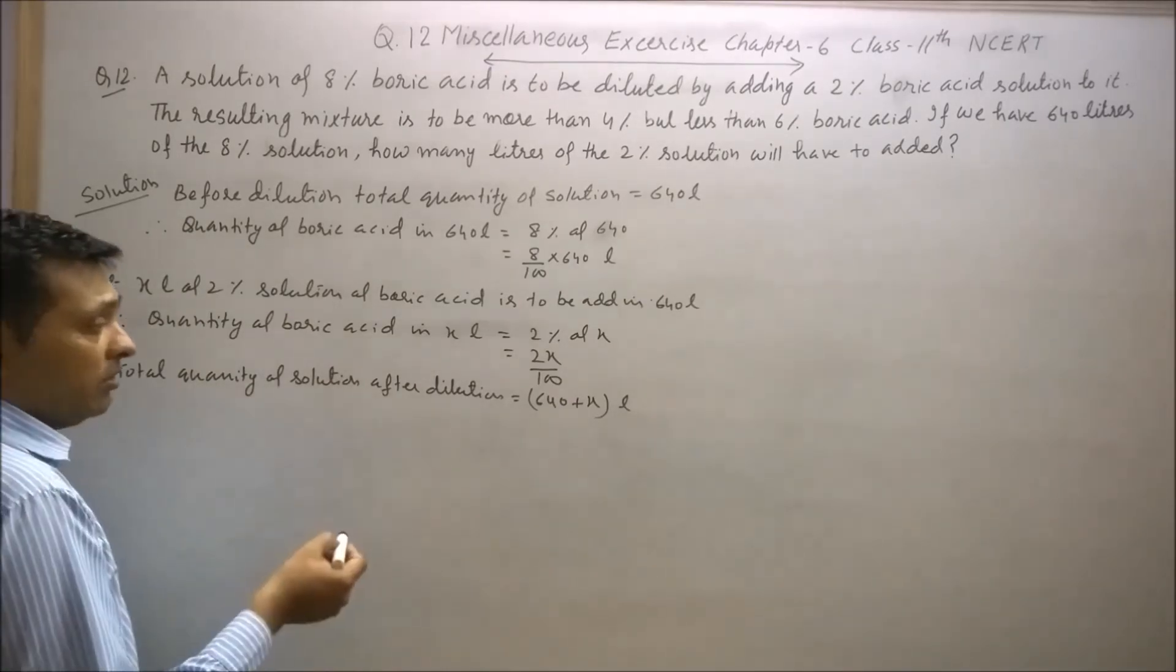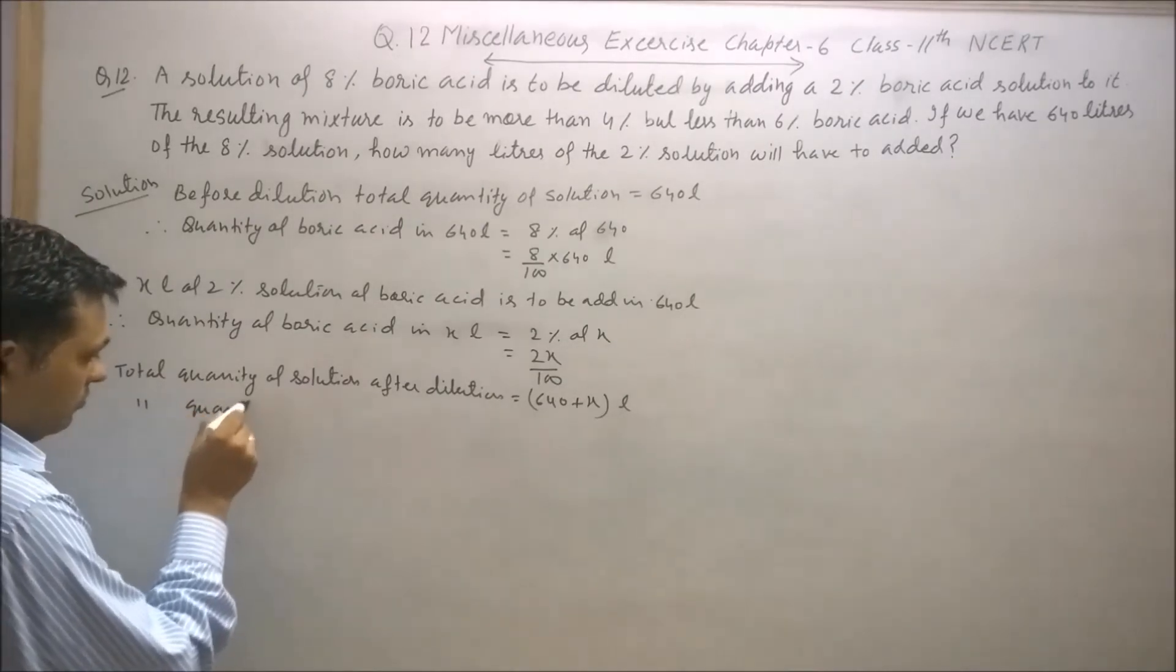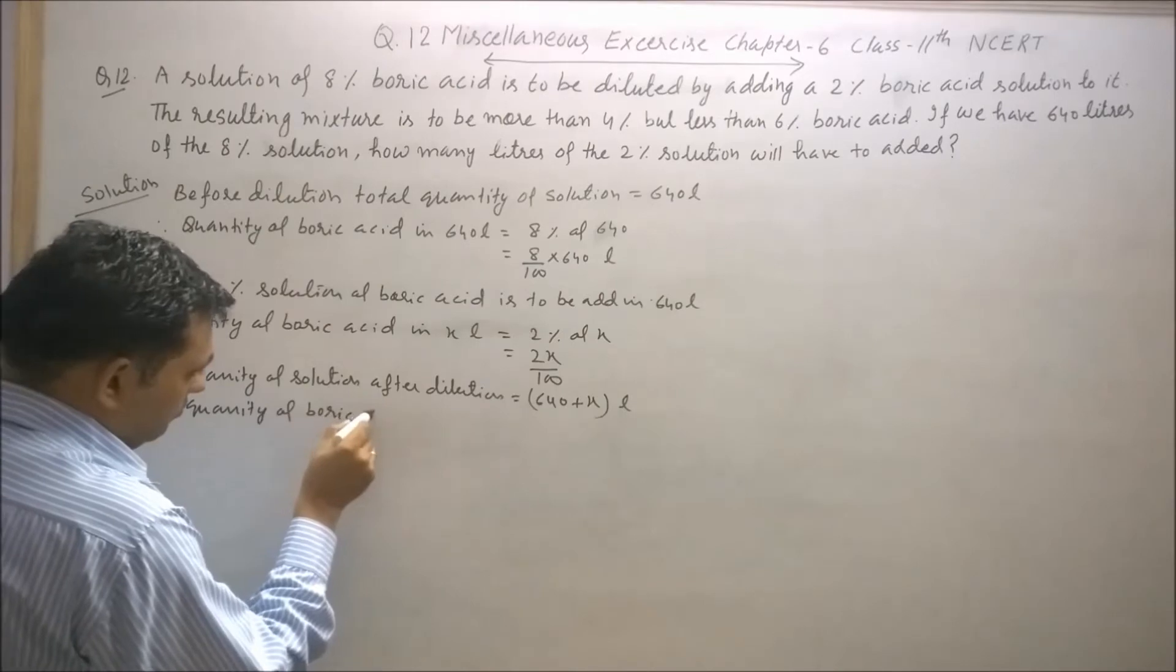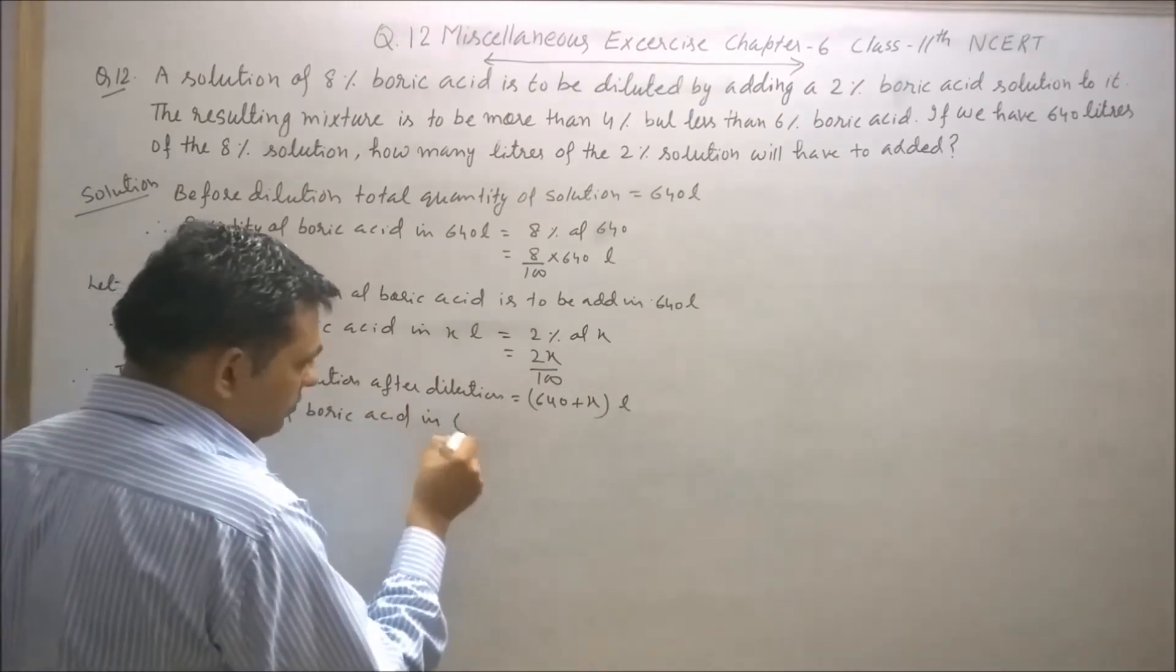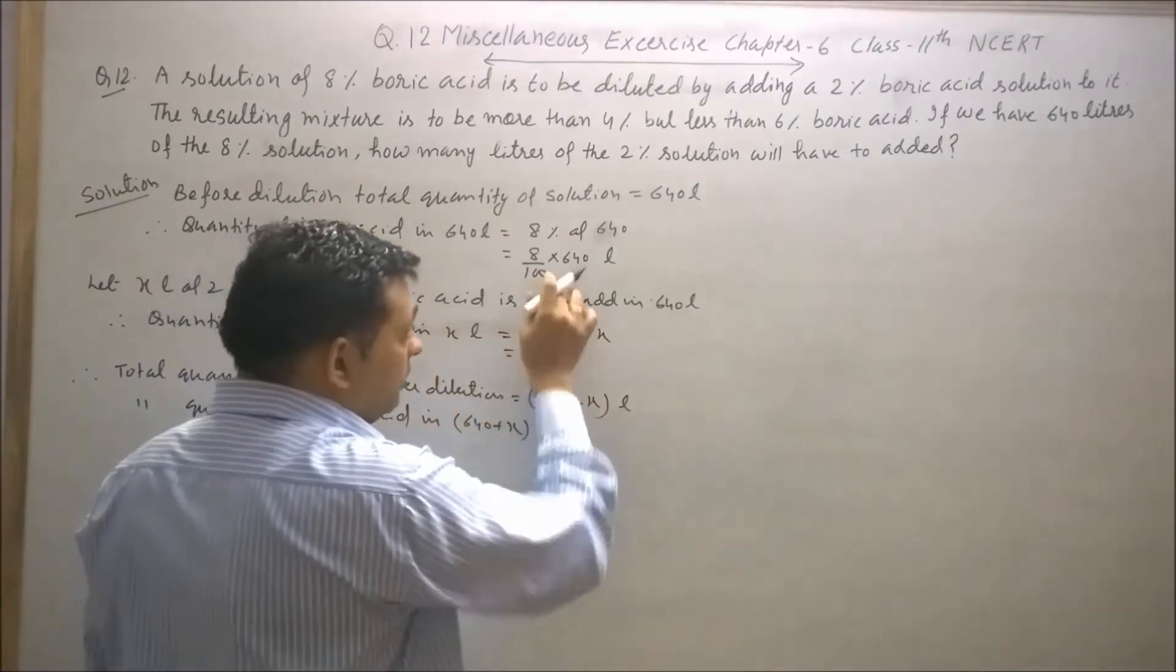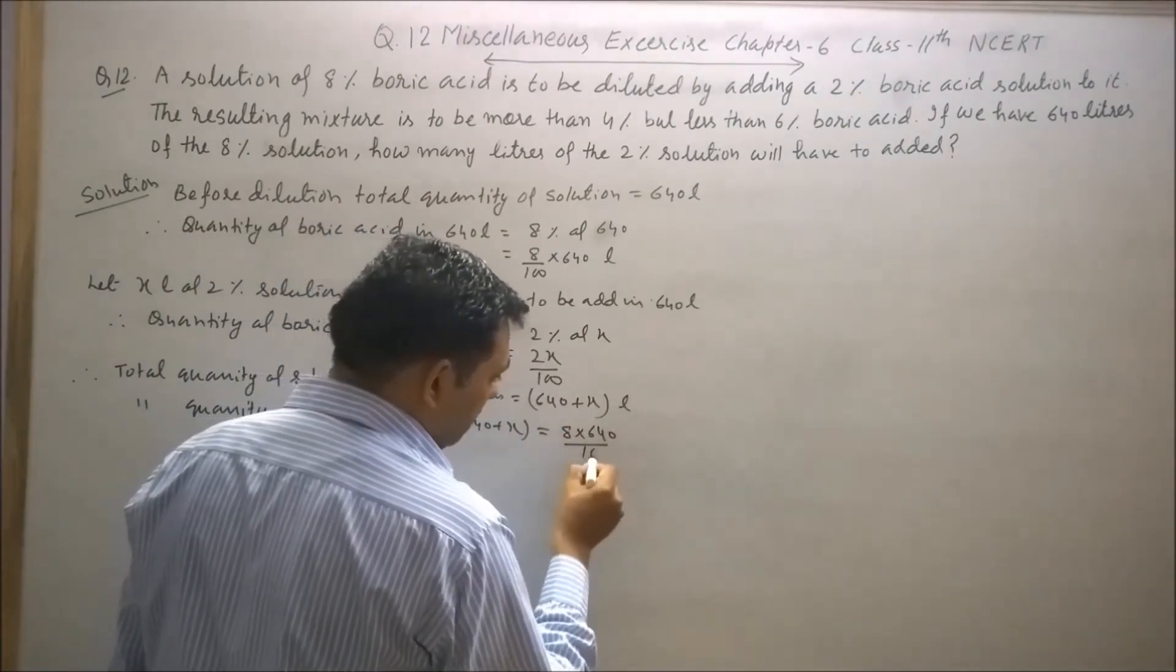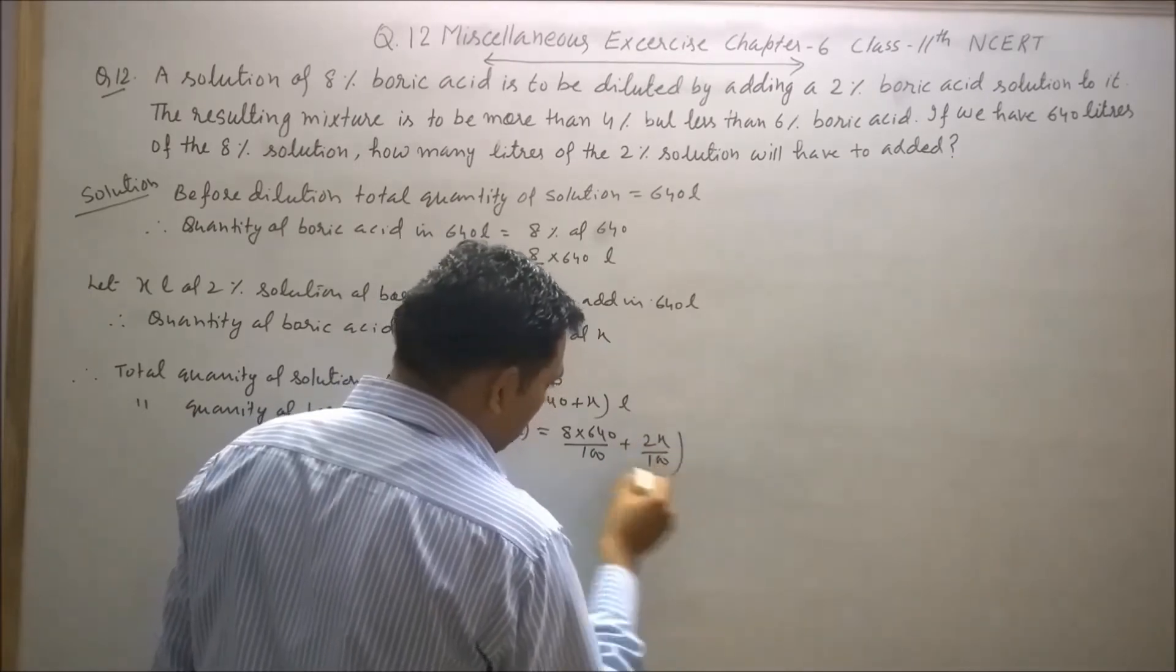Total quantity of boric acid in the total volume of 640 plus x will be equal to 8 into 640 by 100 plus 2x upon 100.